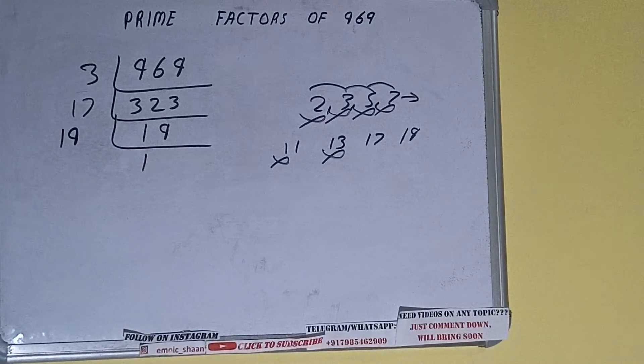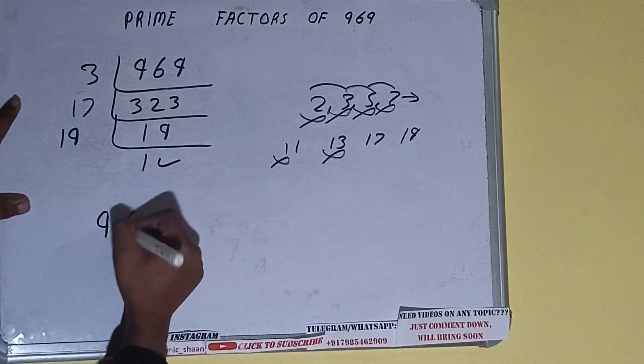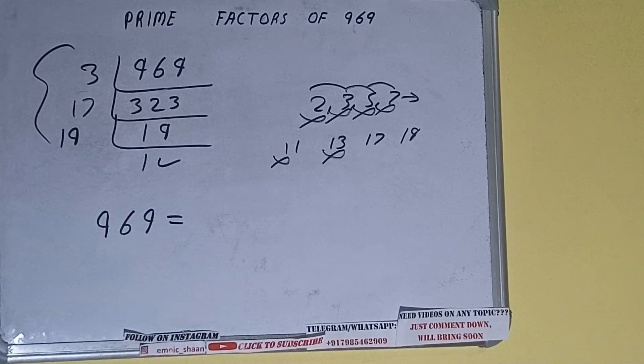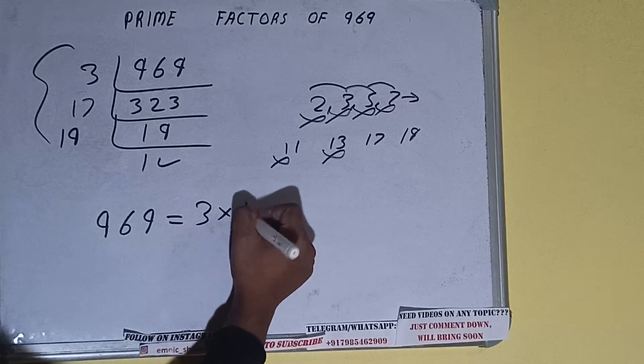Once we do so, we'll be getting 1. Once we get 1, we need to stop and do the last thing: prime factors of 969 equals multiply whatever we have on the left-hand side, that is 3 times 17 times 19.